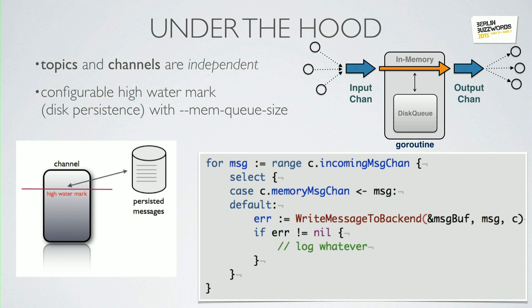What's happening under the hood? Most of this is implemented with Go channels. Specifically, NSQ leverages buffered channels to manage in-memory message queues and writes overflow to disk. NSQ has this concept of a high watermark — during extended downtime of a downstream system, messages will be kept in memory until they reach that watermark, after which they'll be written to disk. Then when the downstream systems come back online, the messages both on disk and in memory will be sent. Topics and channels are independent, so if one downstream system is having issues, only a single channel will back up while all other channels for that topic will still successfully process messages.